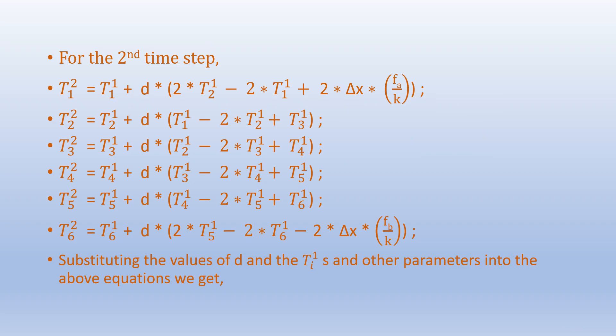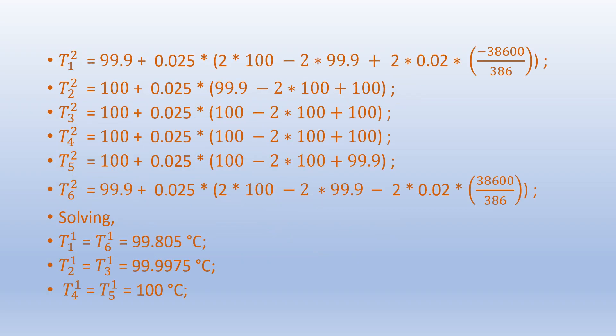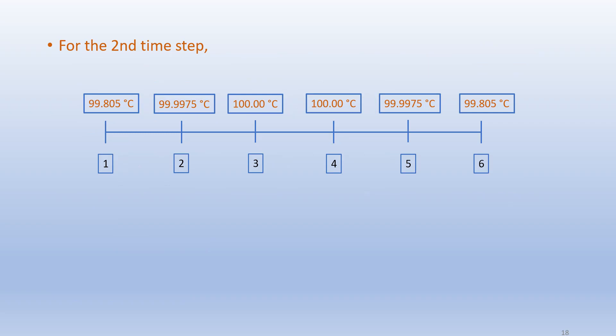We follow the same procedure to obtain temperatures for the second time step. The finite difference equations for the next time step are given; we substitute the values of d and the previous temperatures into those equations. We can then solve for the temperature values at all nodes, and the temperature distribution for the second time step is presented.